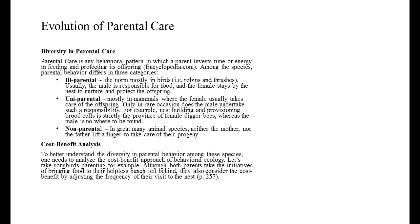There's bi-parental, the norm mostly in birds, where usually the male is responsible for food and the female stays by the nest to nurture and protect the offspring. Then there's uniparental, mostly in mammals where the female usually takes care of the offspring. Only on rare occasion does a male undertake such a responsibility. For example, nest-building and provisioning brood cells is strictly the province of female digger bees, whereas a male is nowhere to be found.